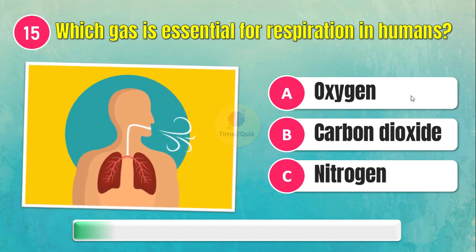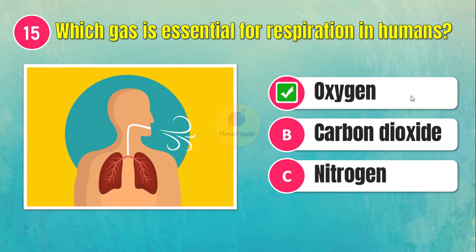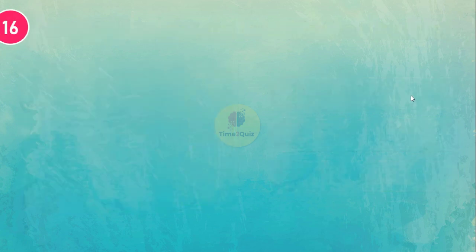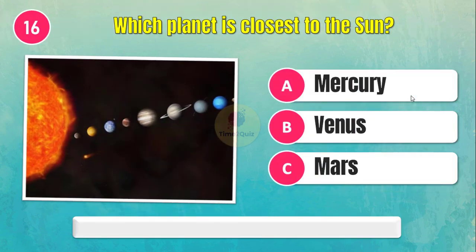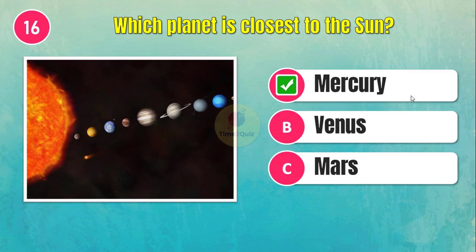Which gas is essential for respiration in humans? Oxygen. Which planet is closest to the Sun? Mercury.